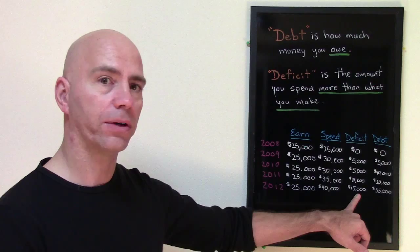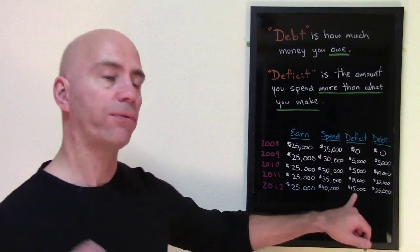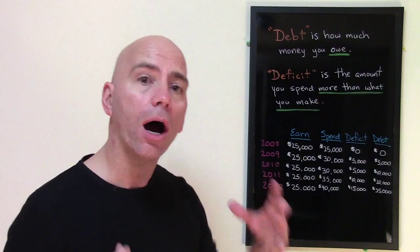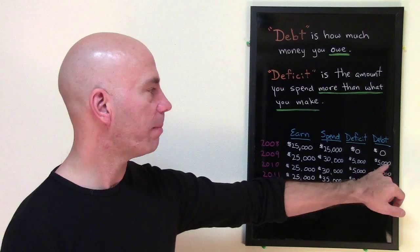Your deficit for this year was $15,000 — the difference between $40,000 and $25,000. So $15,000 is your deficit for 2012, and when you add this amount to the total debt, you now have $35,000 of debt in total.